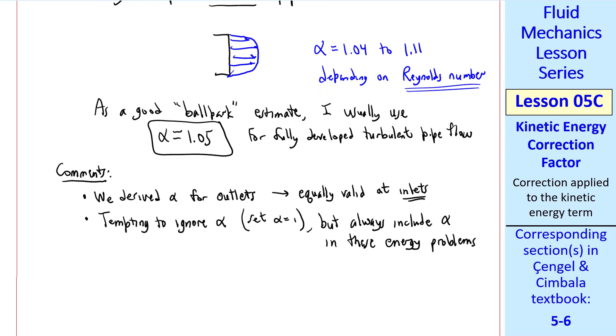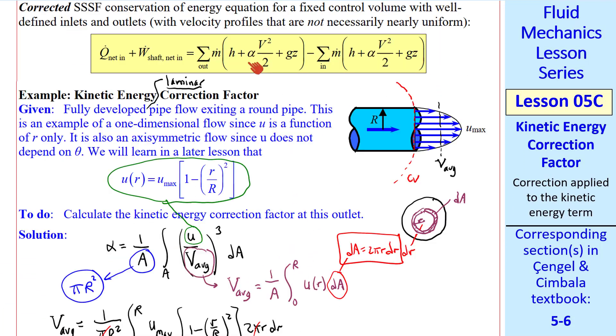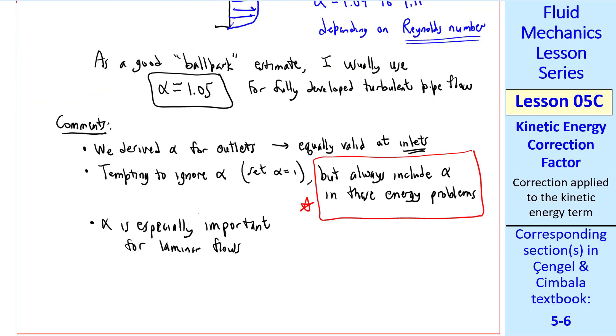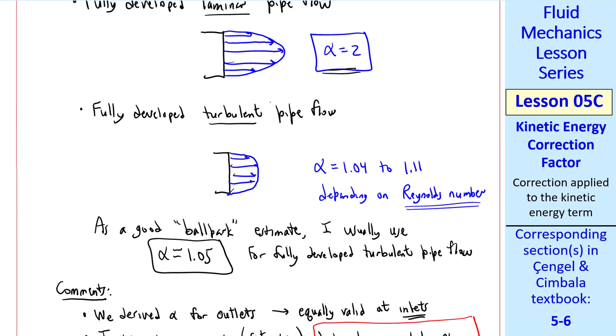But I'll say to always include α in any of these energy problems. Going back to our equation, you just remember to put an α everywhere you have a v² term, so it's not that much extra work. Another comment,